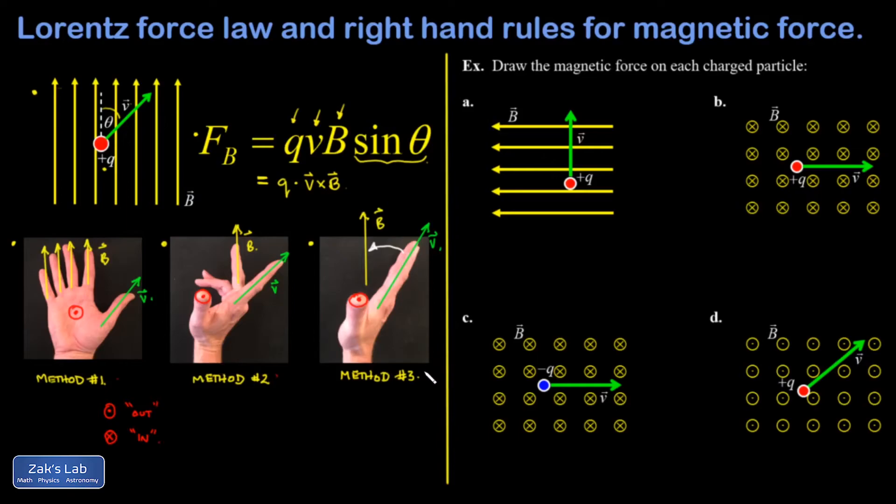The one I'm usually going to show is method three, because that's the way I'm most comfortable doing it. So what I do is figure out how can I align my fingers in the direction of V and sweep out to the direction of B through an angle less than 180 degrees. If you try to do this the wrong way, you're going to sprain your wrist.